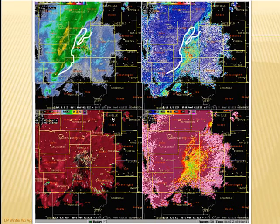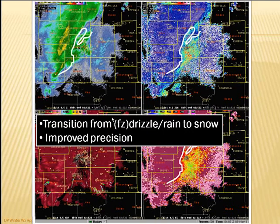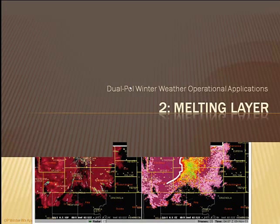Just to summarize: we get improved precision as far as what we're trying to forecast, especially when talking about transition of precipitation types.